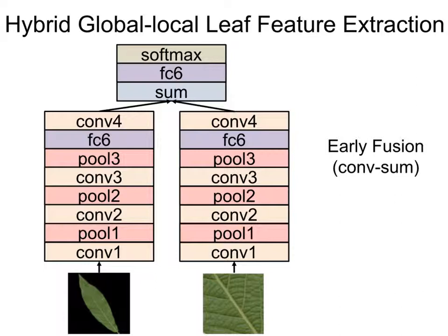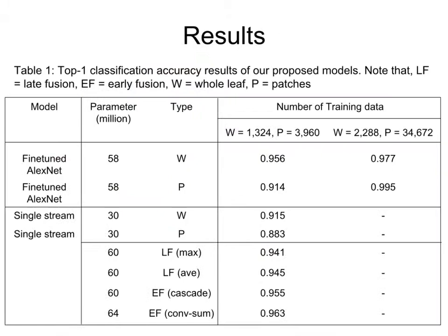Based on our preliminary experiments and visualization outcomes, we gain an important intuition that CNN trained using whole leaves and leaf patches extracts different levels of contextual information. Henceforth, in the next study, we designed a new hybrid global-local feature extraction model for leaf data based on a CNN approach, where one global network is trained upon the whole leaf data and another local network is trained upon its corresponding leaf patches. Our experimental results show that combining both global and local leaf data is an alternative to boost classification performance, and using the early fusion method based on convolution sum, we could achieve the best accuracy.